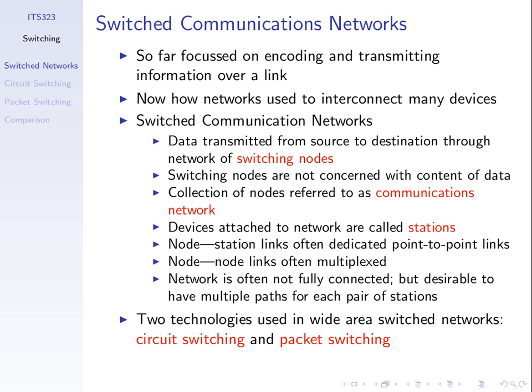What's a path? From station A to station F, for example, one path in this example is via four, seven, and six. Another path is four, five, six. Another path is four, one, two, three, five, six. So there are multiple paths from this one source station to this one destination station. For a pair of stations, it's desirable to have multiple possible paths. But the network is generally not fully connected — fully connected would require many, many links, and it's generally not feasible.